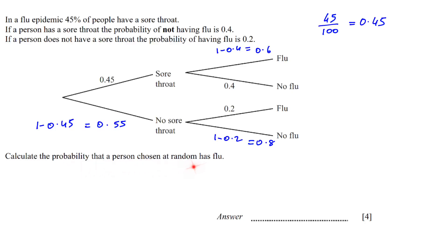We have to calculate the probability that the person chosen at random has flu. So he could have a sore throat and have flu, or you could have no sore throat and have flu. So we will multiply those probabilities. Sore throat and flu: 0.45 multiplied by 0.6, and then you have no sore throat which is 0.55 multiplied by flu which is 0.2. The answer is 0.38.